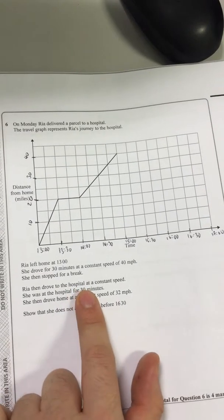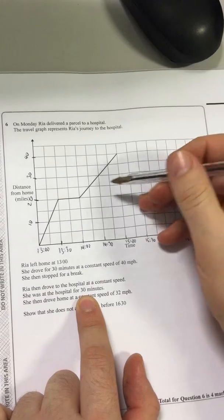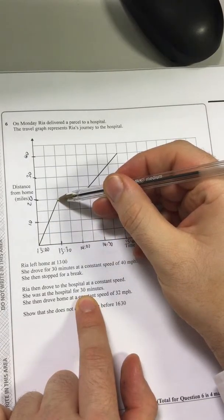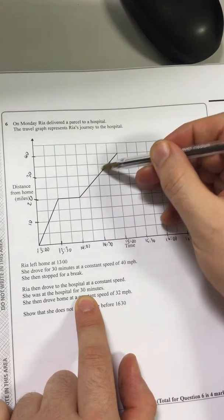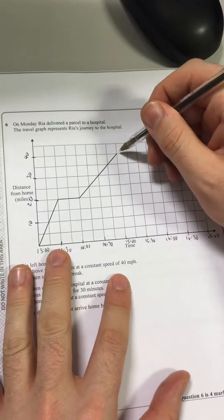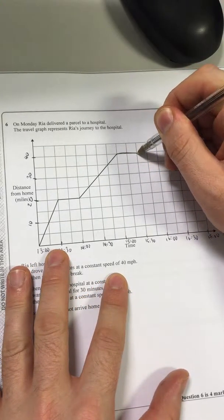So she was at the hospital for 30 minutes. So she drove somewhere, she was driving somewhere, she stopped on the way, she then continues to hospital, then she stopped for half an hour. So let's get that horizontal part in. She's there for half an hour.